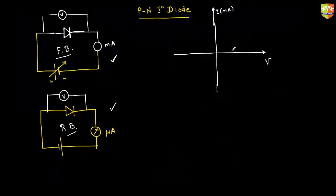If I apply a very small voltage, say 0.01 volt, that voltage may not be sufficient for electrons to jump over the potential barrier created at the junction. The electron has to jump from the N side to the P side for current to flow, but there is a potential barrier in between. The external voltage must exceed that junction barrier for current to flow. Typically the junction barrier in forward bias is around 0.6 to 0.7 volts.